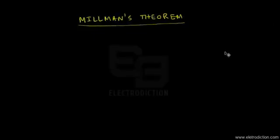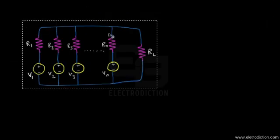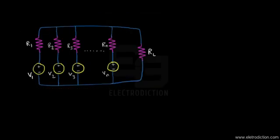Welcome once again to a tutorial on circuit theory. Today we're going to learn about Millman's theorem. It's one of the network theorems. Before we go into the theorem, let's take an example of a network. In this network, you can see there are multiple voltage sources in parallel to each other, as well as their internal resistances.